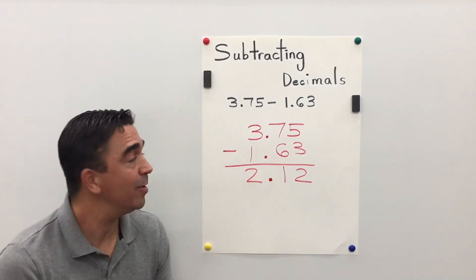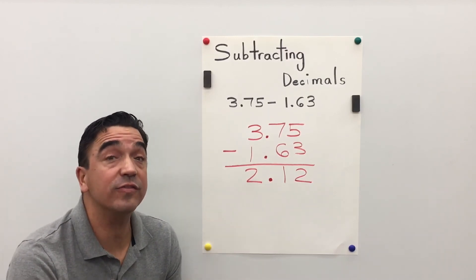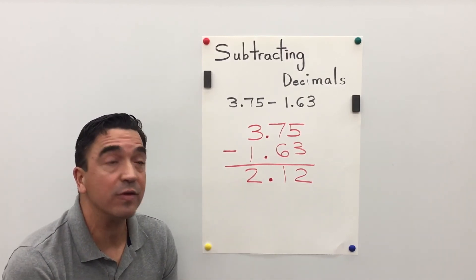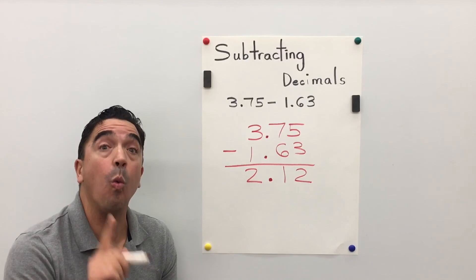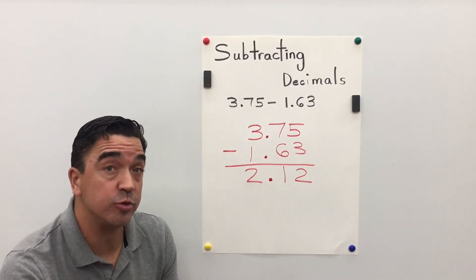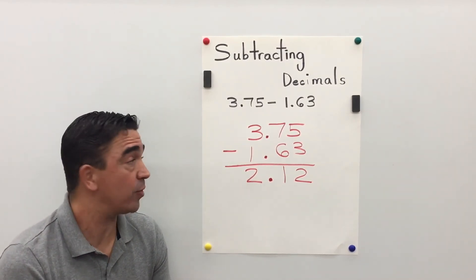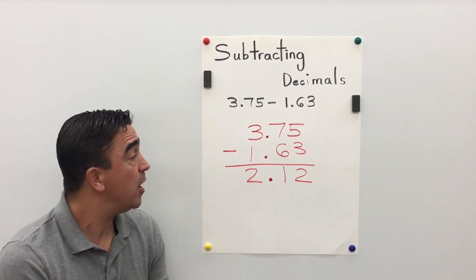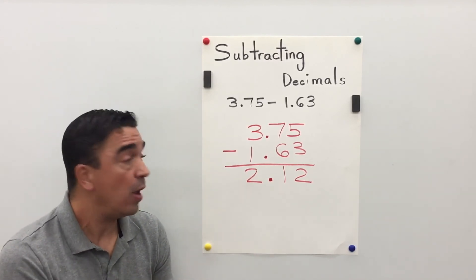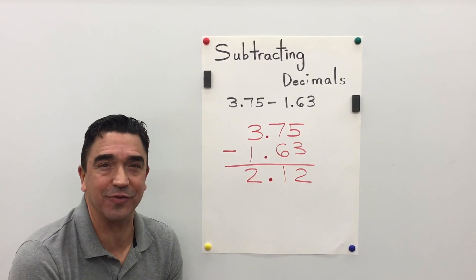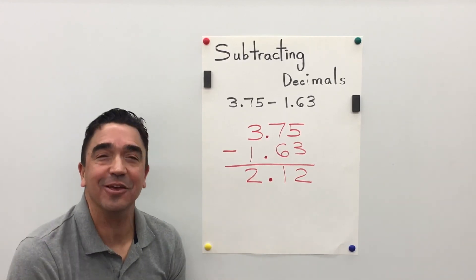So 3 and 75 hundredths minus 1 and 63 hundredths gives us an answer or a difference of 2 and 12 hundredths. And that concludes our lesson.